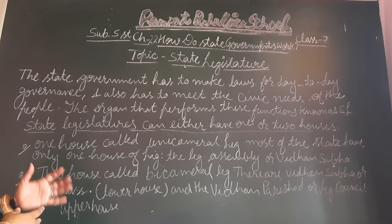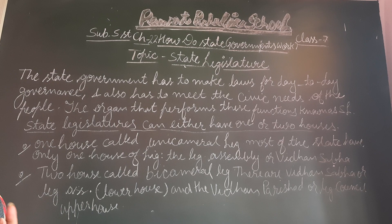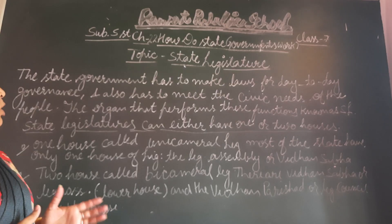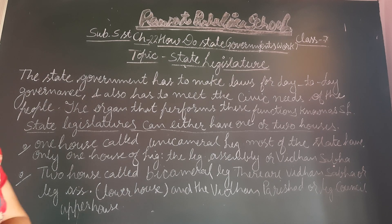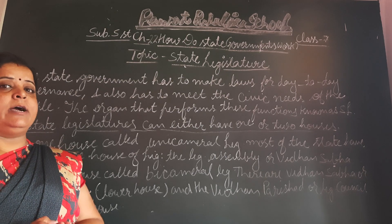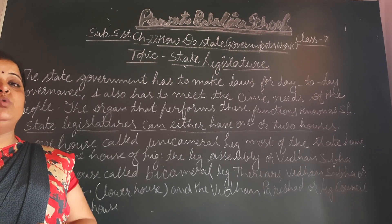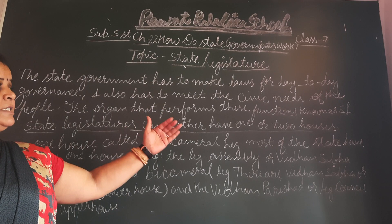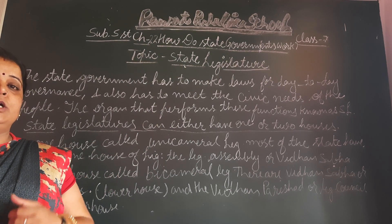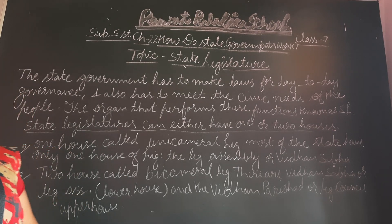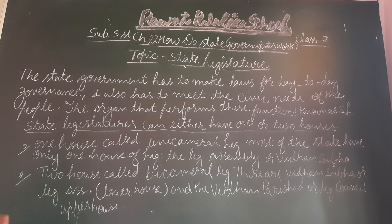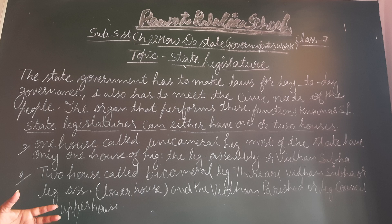Now, the state government has to make laws for day-to-day governance and also has to meet the civic needs of the people. Means, the state government makes rules for day-to-day life and fulfills the civic needs of citizens. The organ that performs these functions is known as the state legislature.